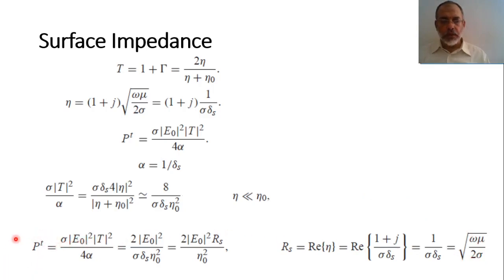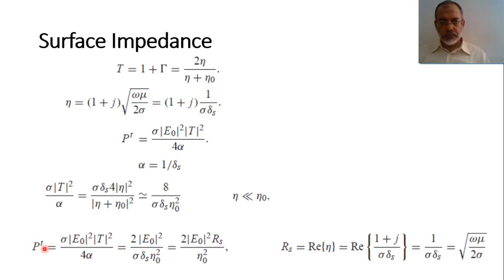The transmitted power can be expressed in terms of the equivalent surface impedance of the conducting medium. This equivalent surface impedance Rs is the real part of the intrinsic impedance. The transmitted power is 2E₀²·Rs/η₀².